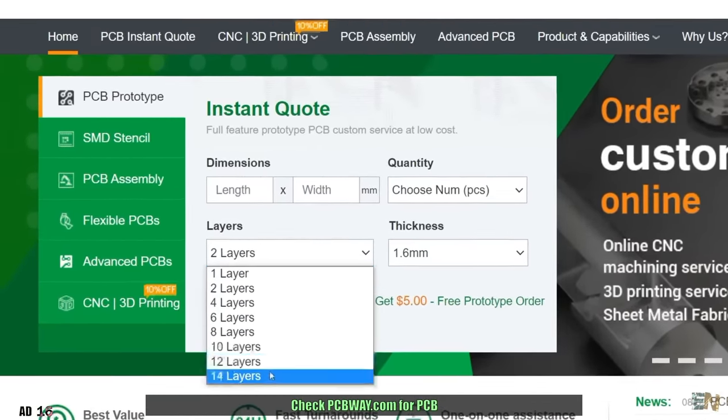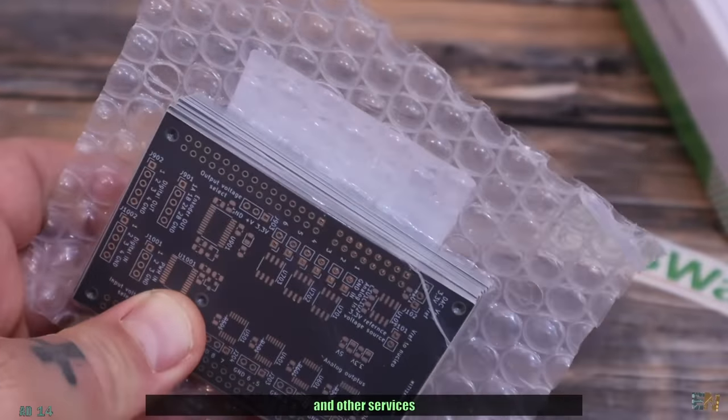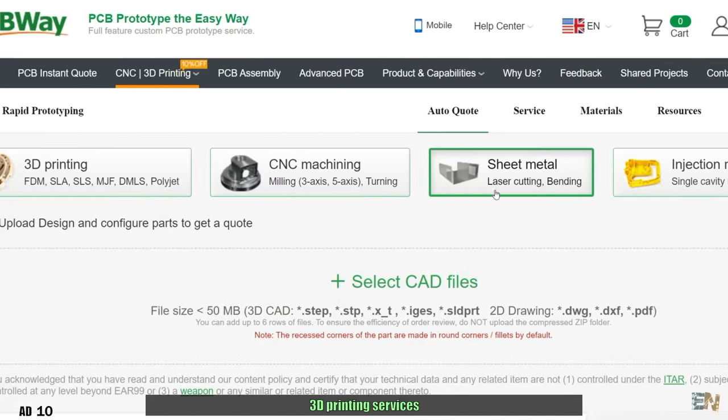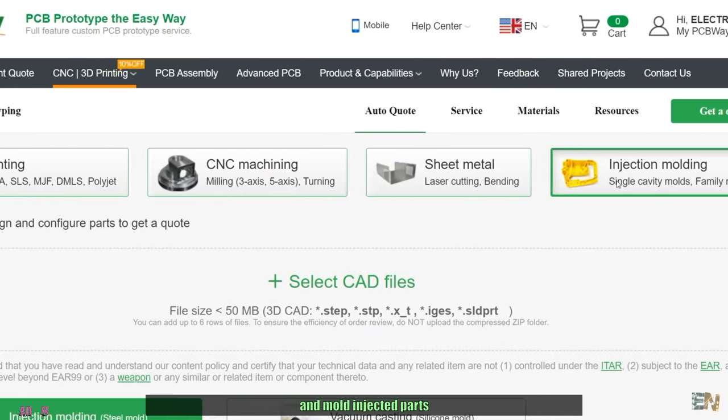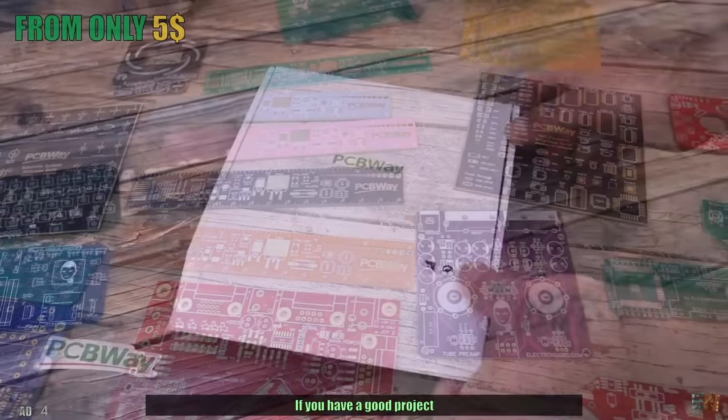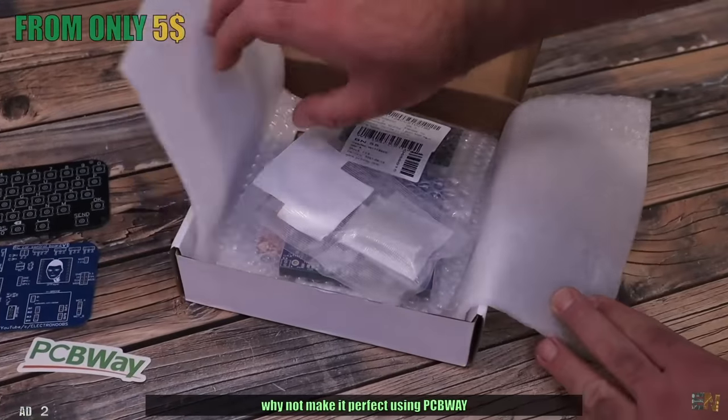So check PCBWay.com for PCBs and other services such as CNC metal engraving, 3D printing services and mold injected parts so you could make the entire project at the same time. If you have a good project, why not make it perfect using PCBWay?